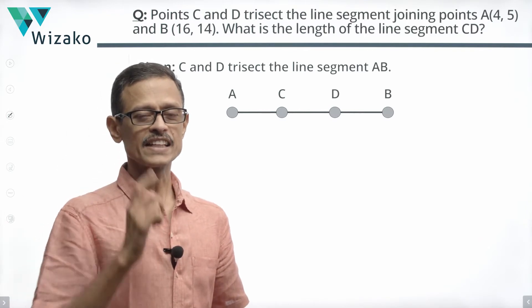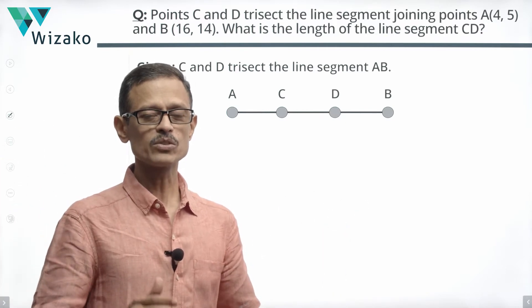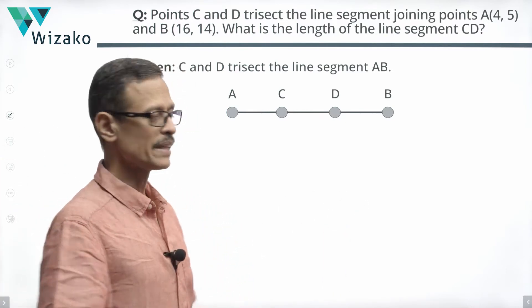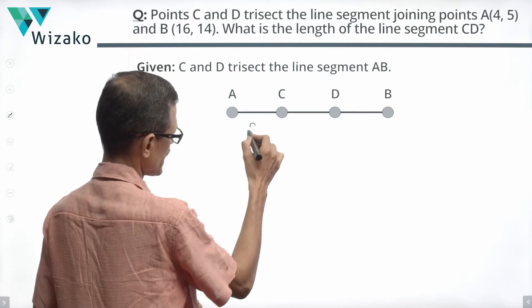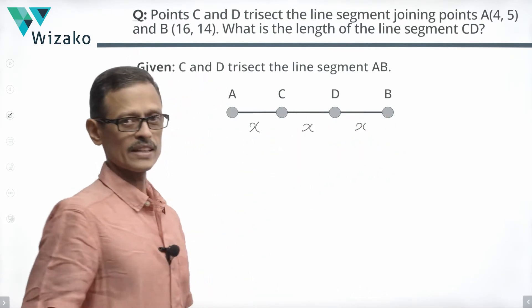Bisecting is dividing it into two equal parts. Trisect is dividing this line segment AB into three equal parts which essentially will mean that AC is equal to X units, CD will also be X units and DB will also be equal to X units.